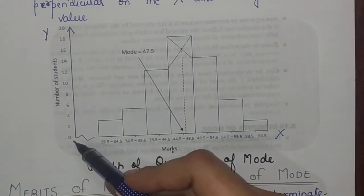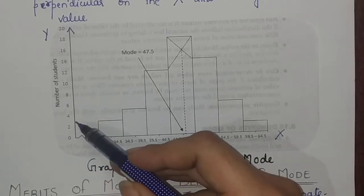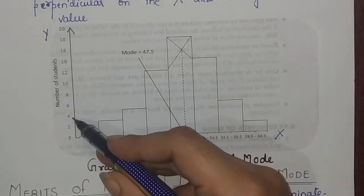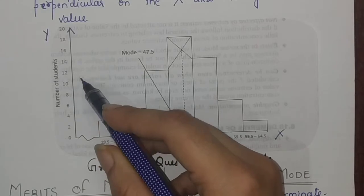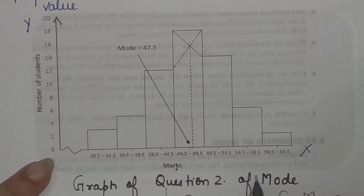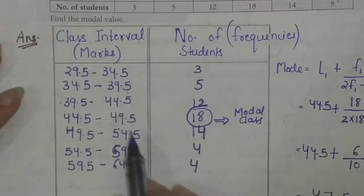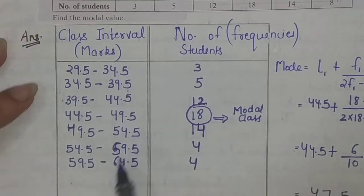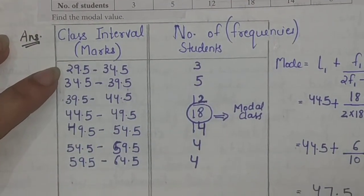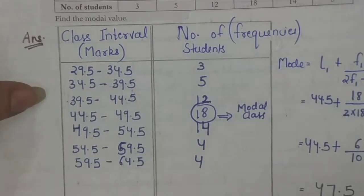We have plotted the y-axis with a gap of 2. On the x-axis, since the marks don't start from 0, I cannot start at 0, 10, 20, 30 — instead it will start from 29.5. That's why we make a small zigzag break on the x-axis to show a discontinuity, and then we start from 29.5.